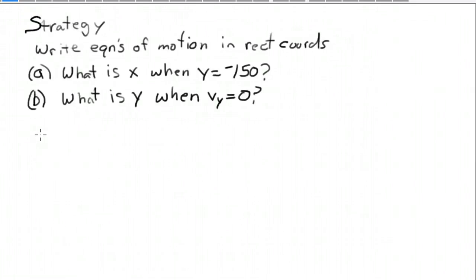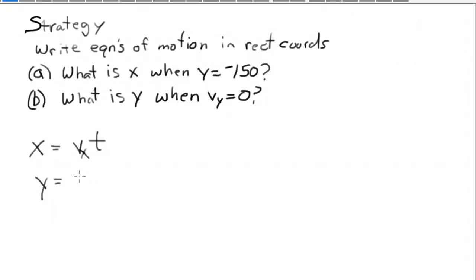For the x-coordinate of the motion, we have constant speed, so x equals the x-component of the initial velocity, v sub x, times the time. The y-coordinate is under uniform acceleration due to gravity, so y equals v sub y times time plus one-half times the acceleration times time squared, where the acceleration is due to gravity.